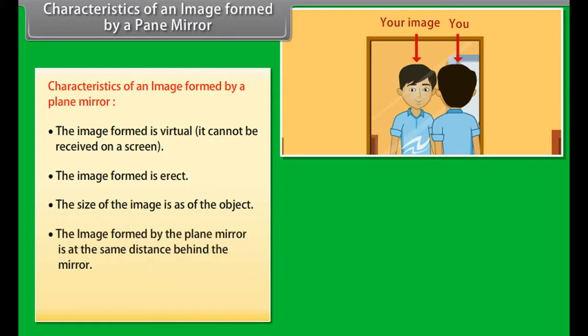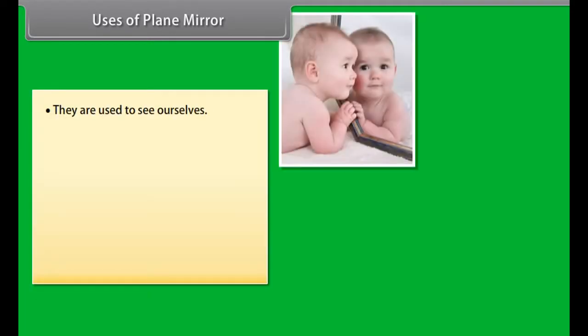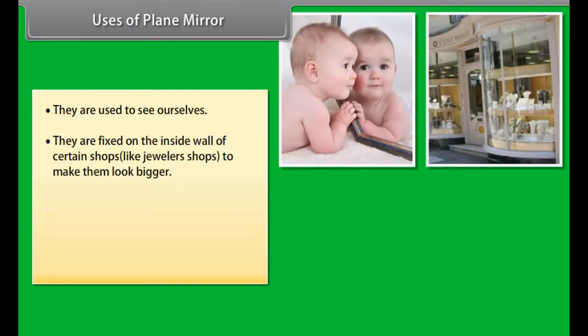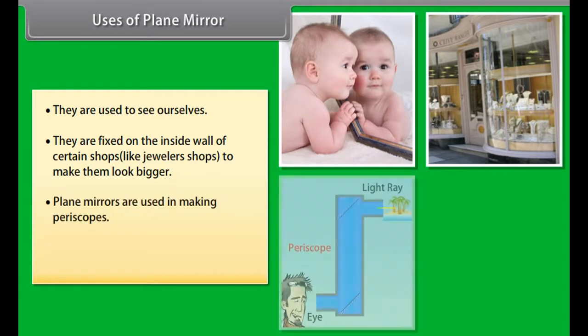Lateral inversion: When an object is placed in front of a plane mirror, the right side of the object appears to become the left side of image, and the left side of the object appears to become the right side of image. This change of sides of an object and its mirror image is called lateral inversion.